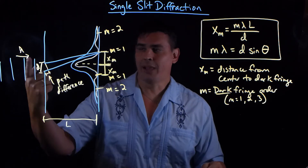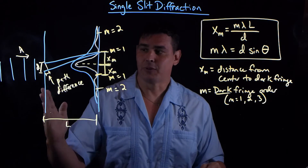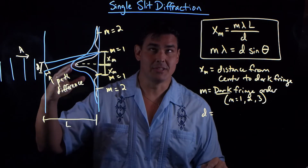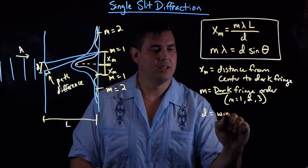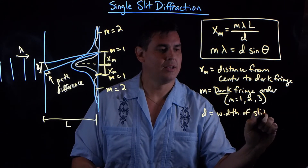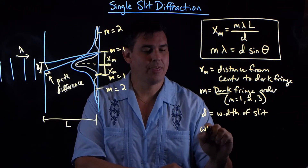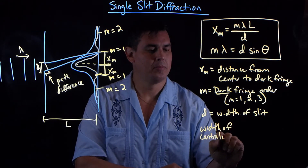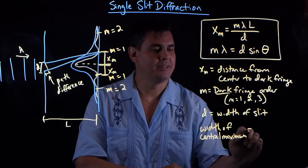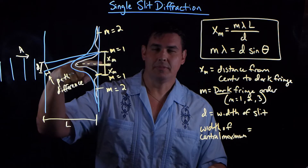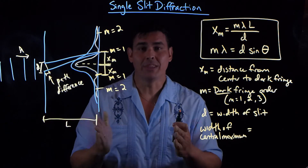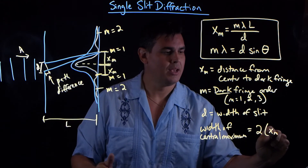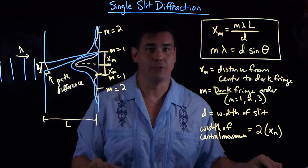Lambda is the wavelength of the light. L is the distance from the slit to the screen, just like in double slits. And D is different — D before was the distance between the two slits, but now D is the width of the slit. Another thing: the width of the central maximum — half of it is xm. So if you want the whole width of the center bright spot, it's just 2 times xm, which is the distance from the center to the first dark fringe.